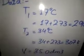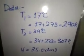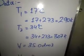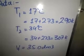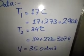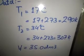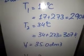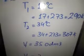Then T2, which is your second temperature, is 34 degrees Celsius. You have to do 34 plus 273, then you will have 307 Kelvin.